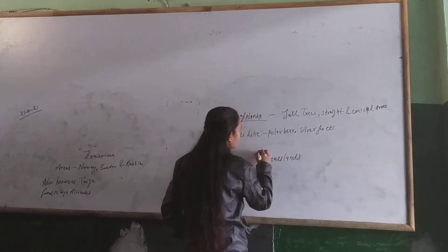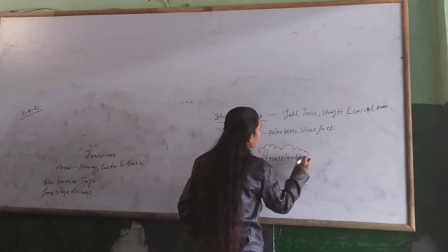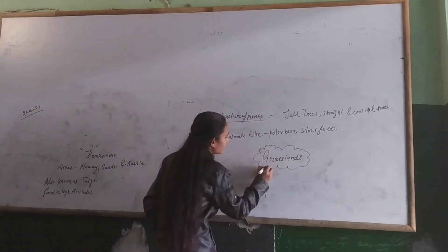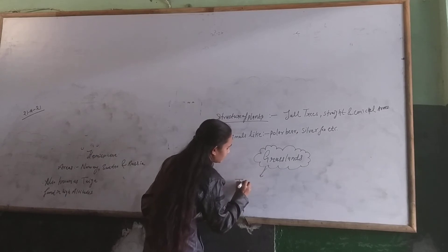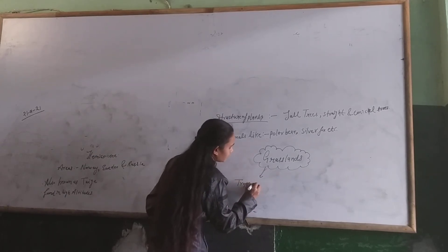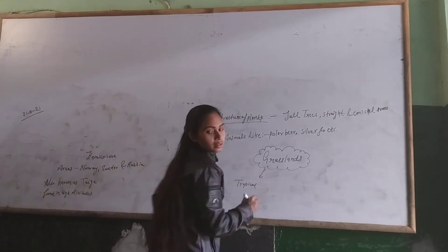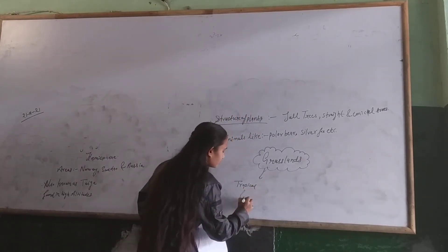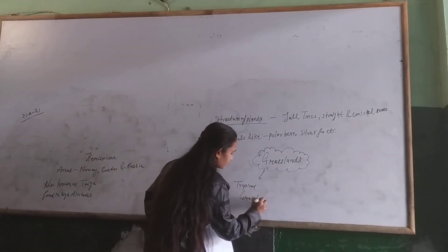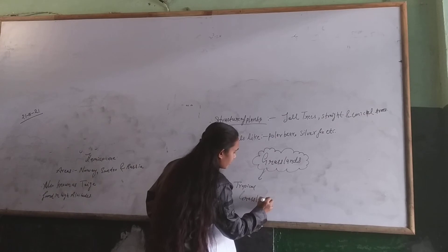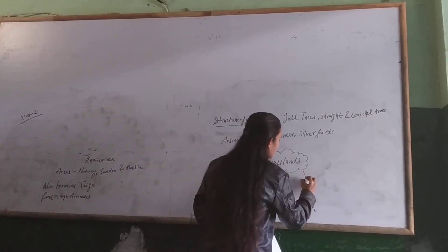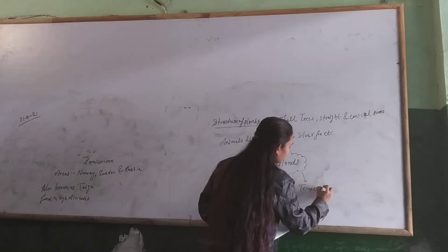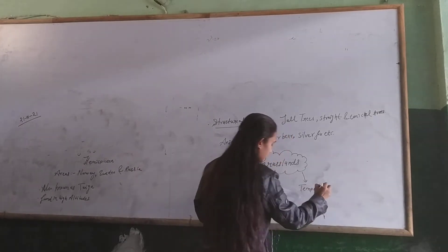We have two types of grasslings. The first kind of grasslings is tropical grasslings, and the other one is the temperate grasslings.